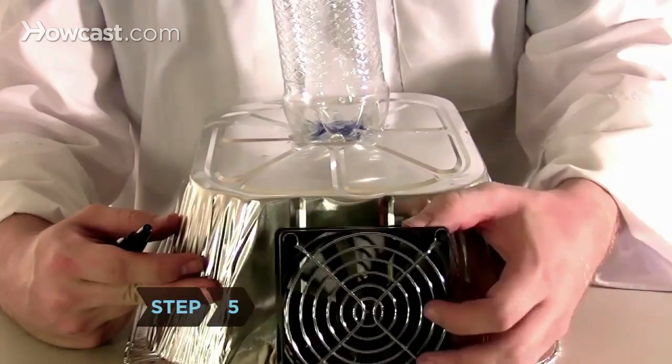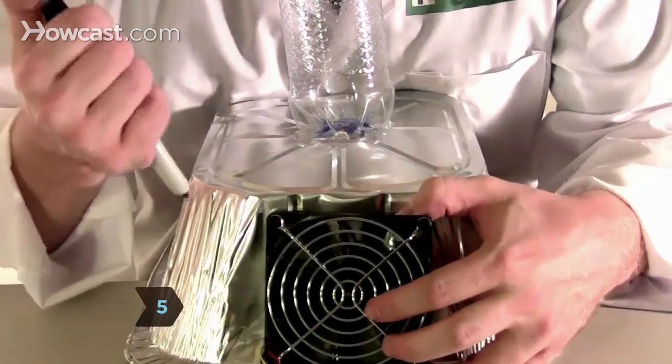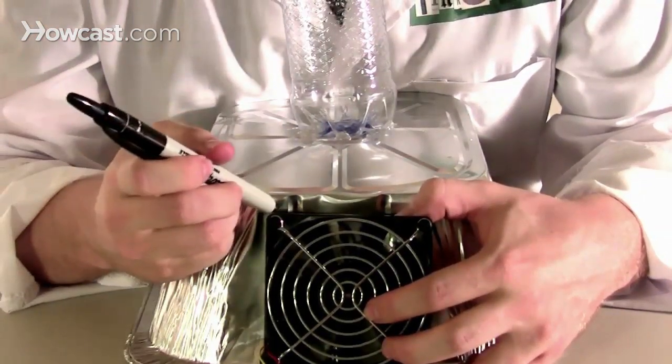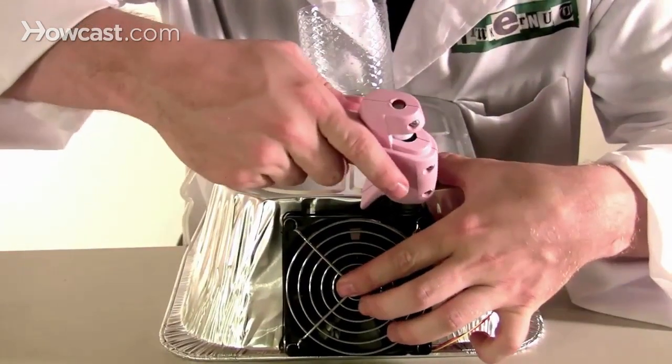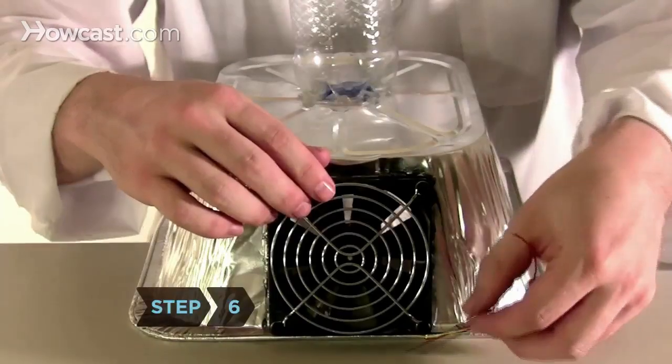Step 5: If using, place the case fan on the center of one side of the second pan. Mark its position and cut a hole a 1/4-inch smaller than the marks. Reposition the fan over the hole and hot glue it into place.